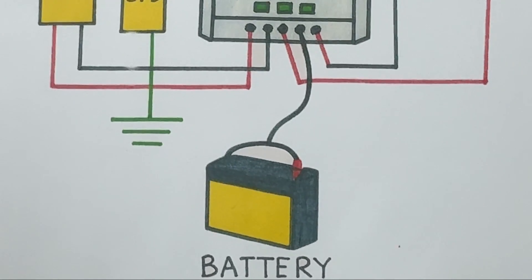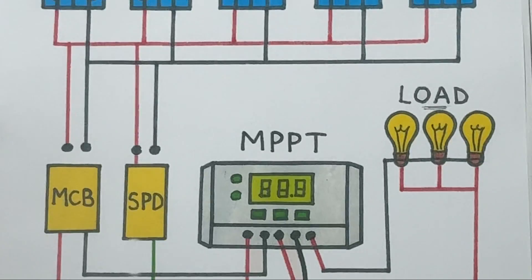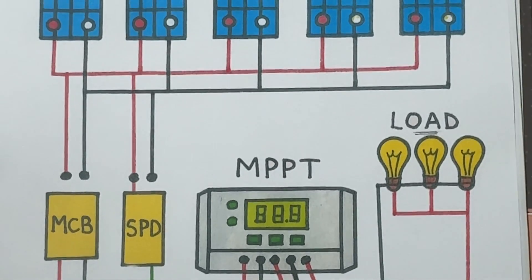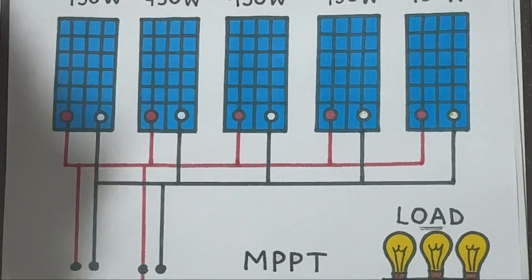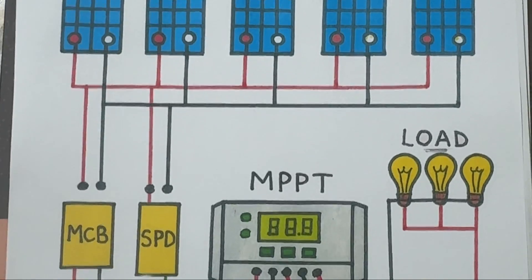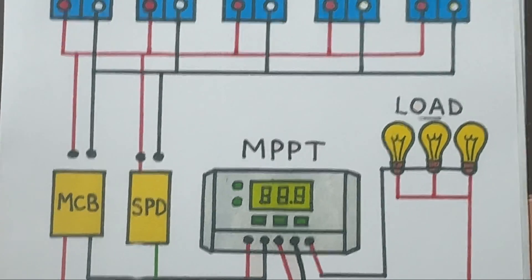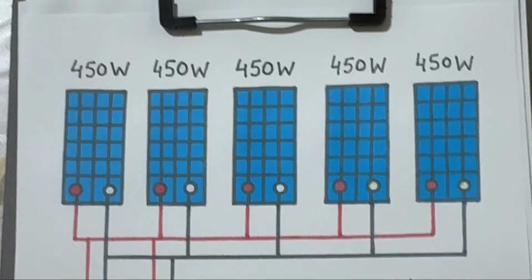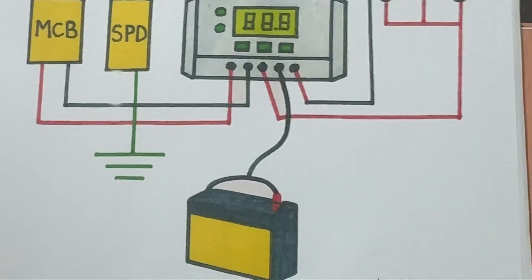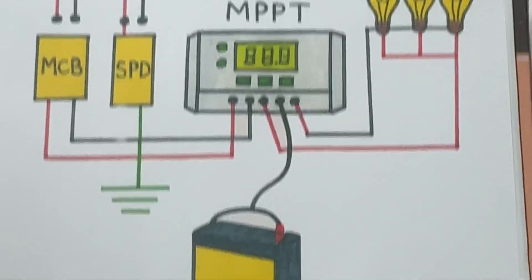That is a complete solar power system in action: simple, efficient, and eco-friendly. So that's how a basic MPPT-based solar setup works. If you liked this explanation, give it a thumbs up, share it with your friends, and don't forget to subscribe for more easy engineering explanations.